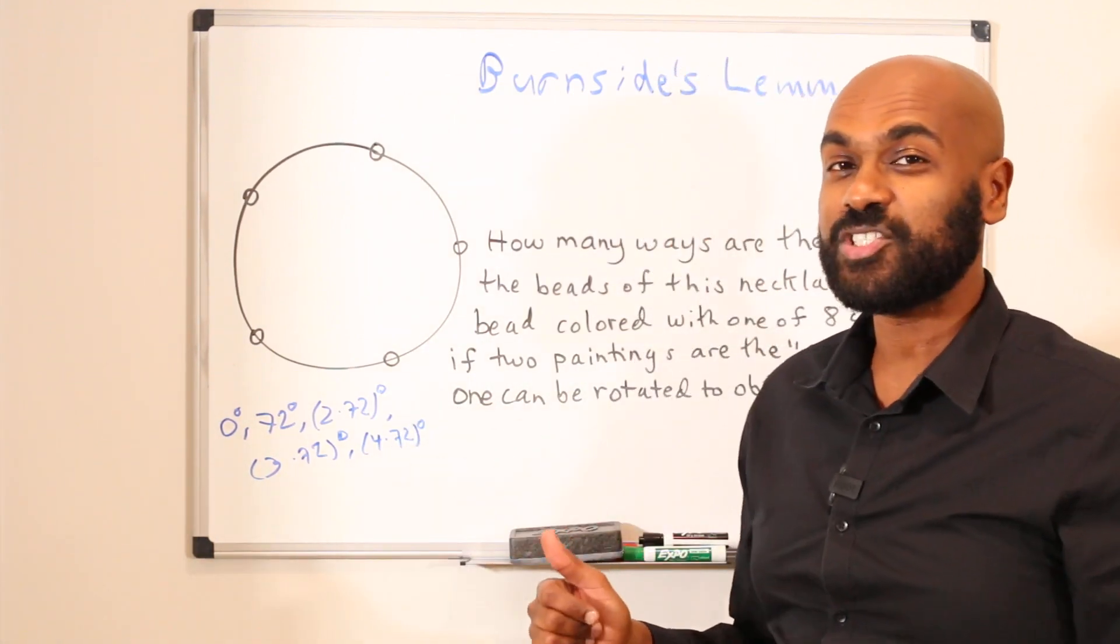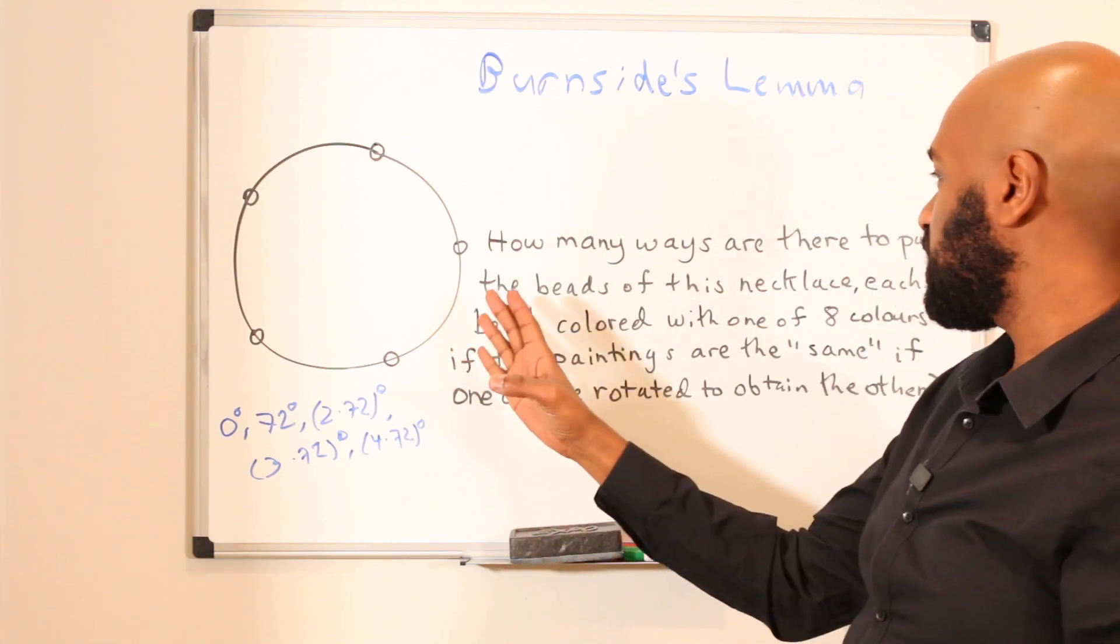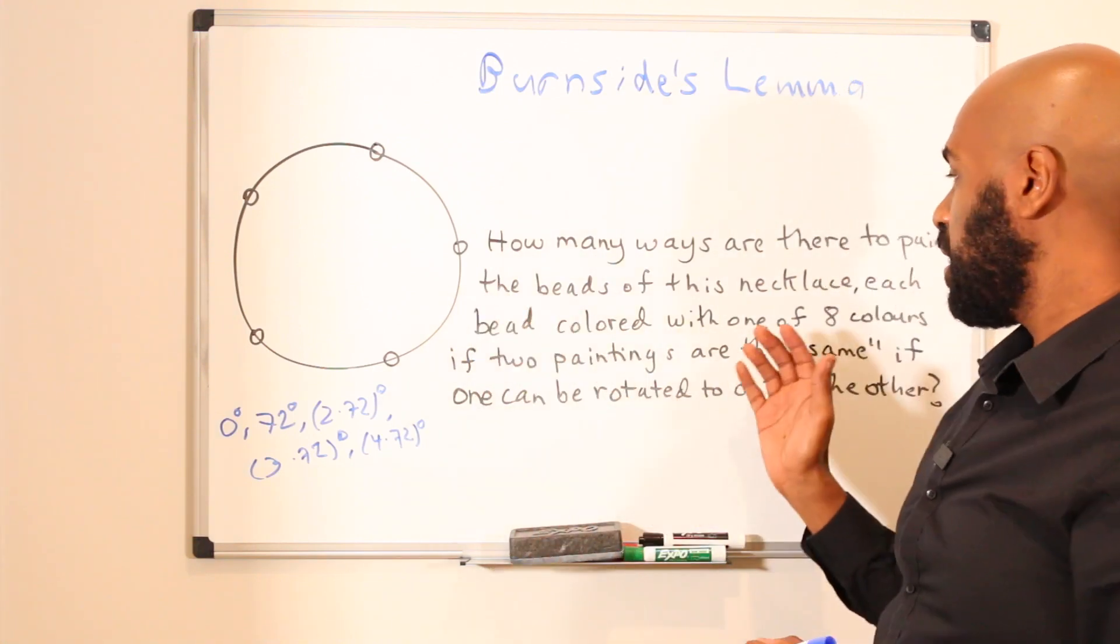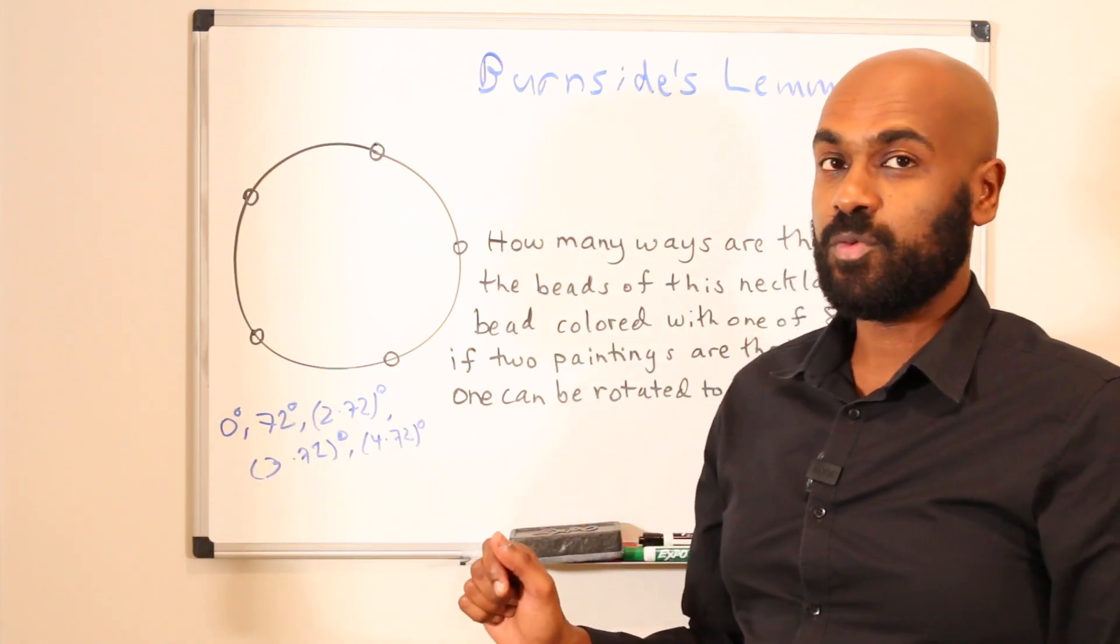So there are the 5 rotations. And for each rotation, you want to record the number of ways to color the beads, or paint the beads, that are fixed under that given rotation.